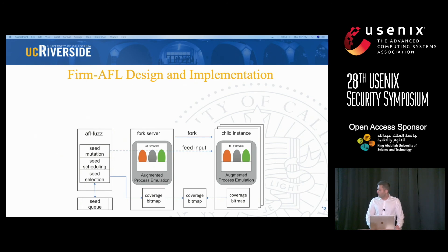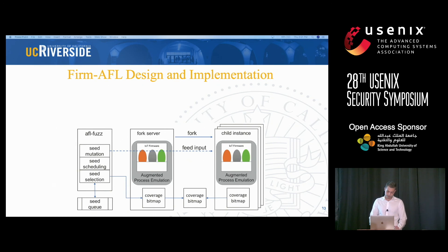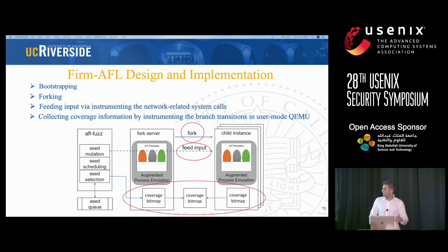We implemented our augmented process emulation in a tool called FirmAFL. FirmAFL is basically integrated with augmented process emulation. In each iteration of fuzzing, AFL mutates a seed input, runs the program with the seed input, collects code coverage information, and if there is new code coverage, it keeps the input. For code coverage collection, AFL relies on binary instrumentation via user mode QEMU. Our main difference with AFL is that we replace the user mode QEMU with our augmented process emulation. Initially we have the bootstrapping phase, then we feed the input, collect coverage information, decide whether the input is useful, and keep repeating this.